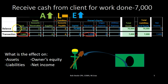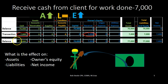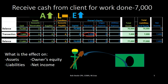Now there's one more step: we started with this balance, we have this transaction, and we need an ending balance. Adding these all up: 70,000 plus 7,000 equals 77,000 in cash. Supplies zero, liability zero, capital 70,000, revenue zero plus 7,000 equals 7,000. The total assets add up to 77,000; liabilities are zero; equity is 70,000 plus 7,000. Assets equal liabilities plus owner's equity — we are in balance, and net income to this point is $7,000.